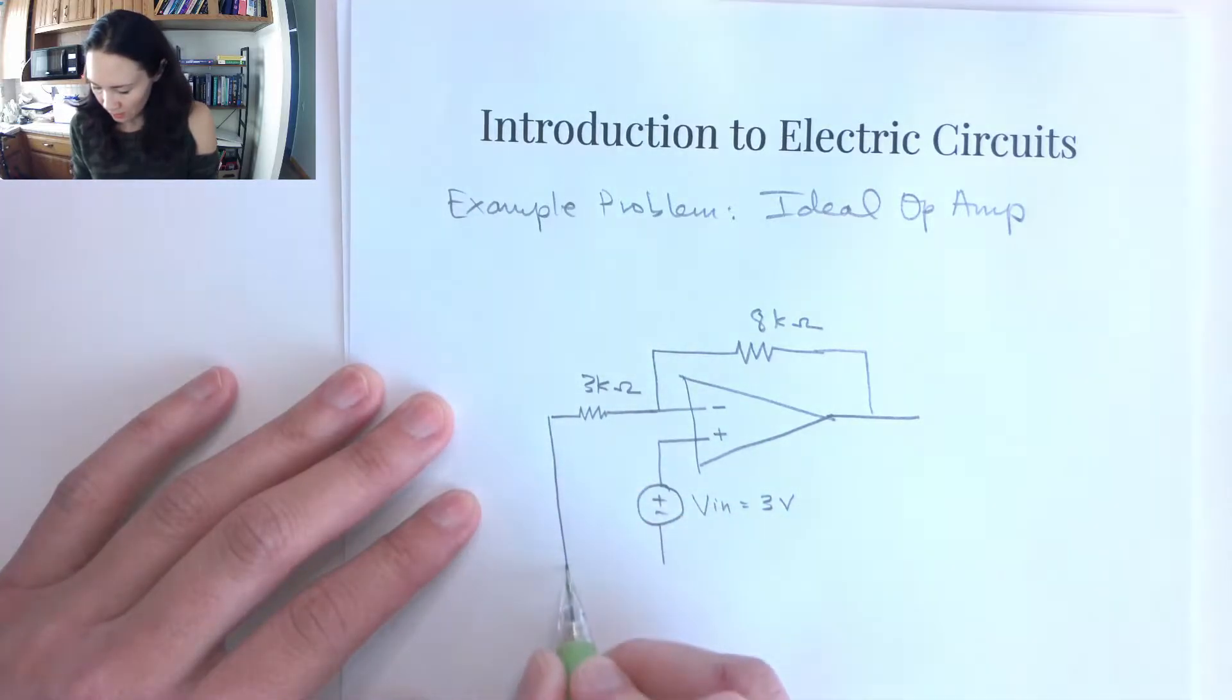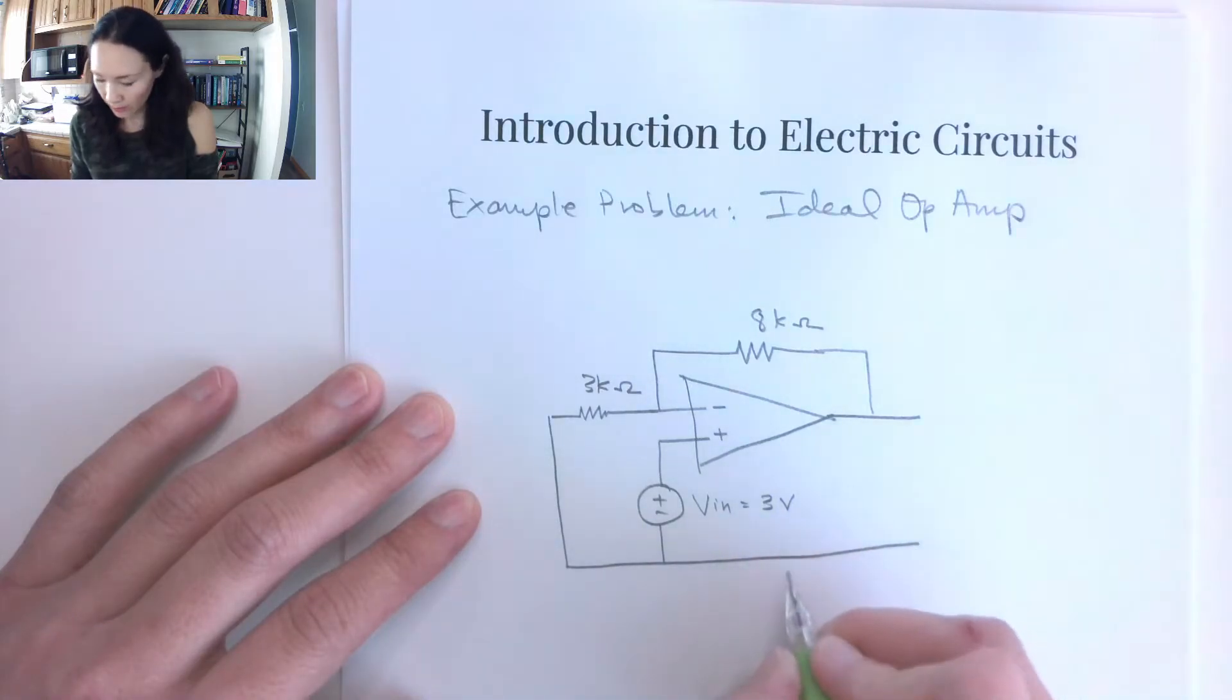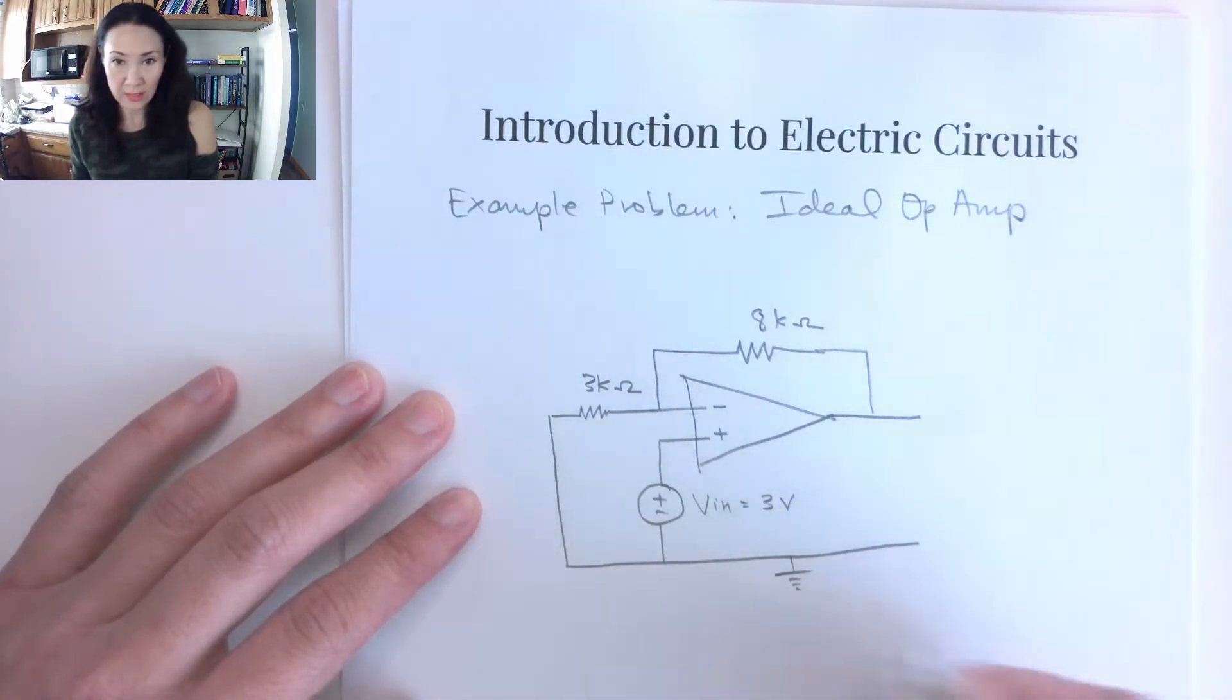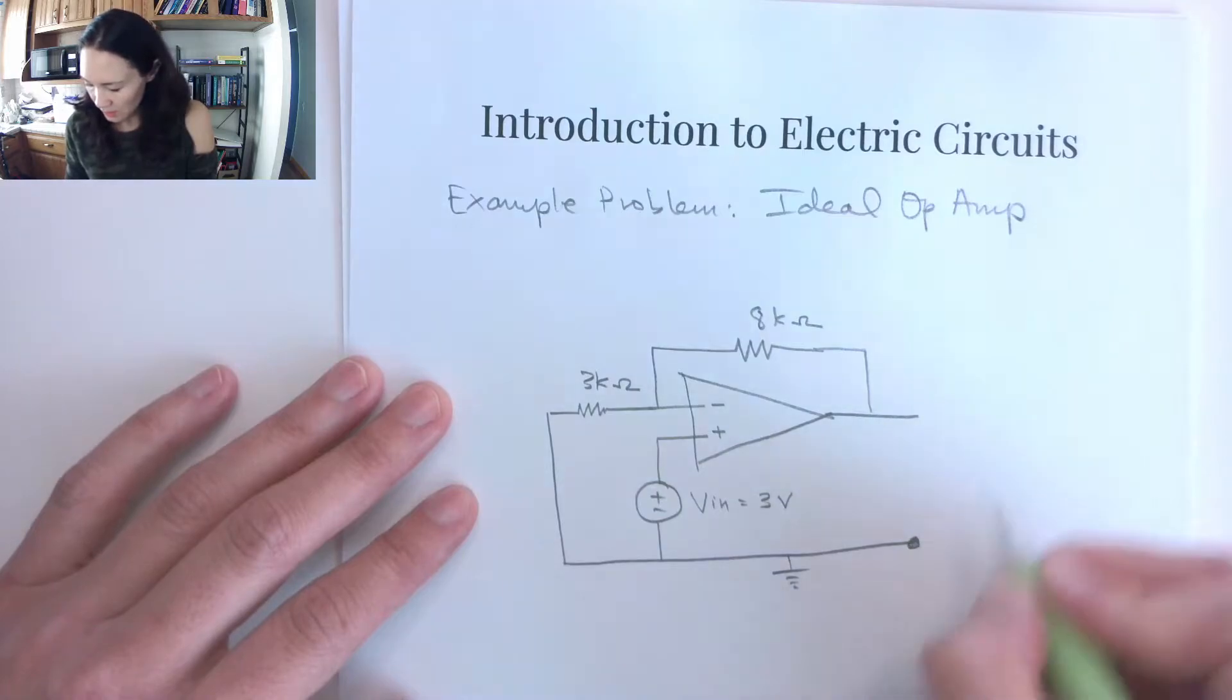And then on the bottom here, I'm just going to have this bottom line be our ground. So I'll indicate it with this ground symbol. And then these two terminals here, this is where we're going to measure our Vout.